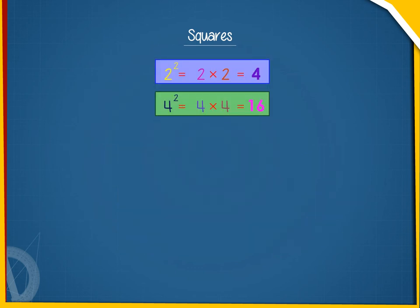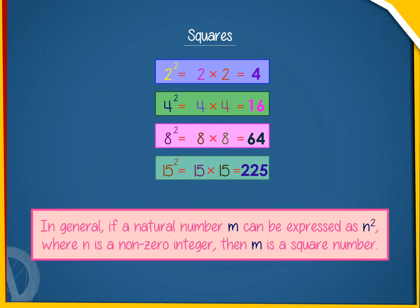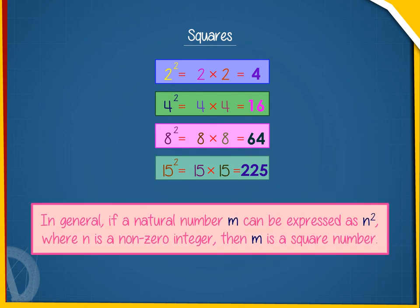For example, 4, 16, 64, 225, etc. In general, if a natural number m can be expressed as n squared, where n is a non-zero integer, then m is a square number.